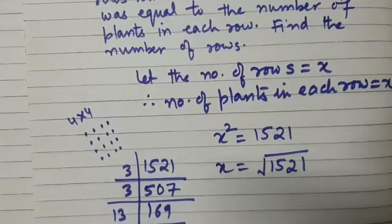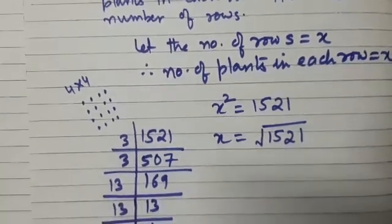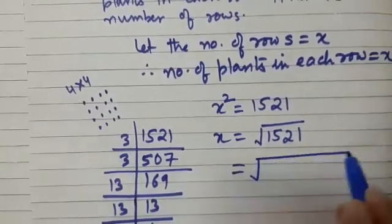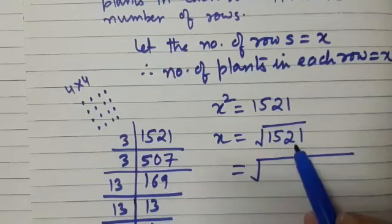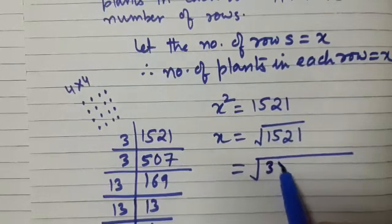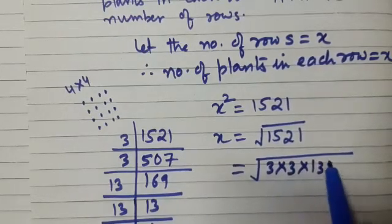We get 169, and it is square of 13. So, we have found the product of prime factors of 1521. This is 3 into 3 into 13 into 13.